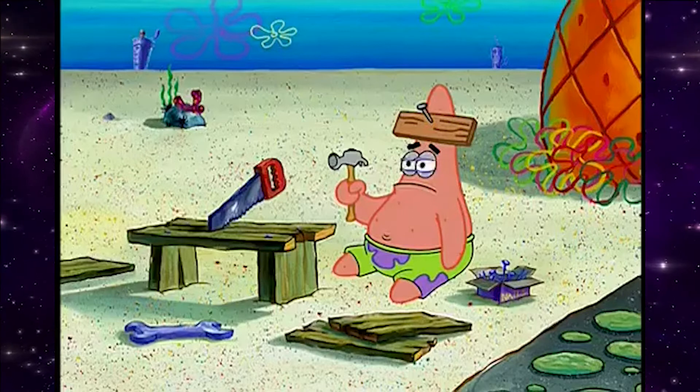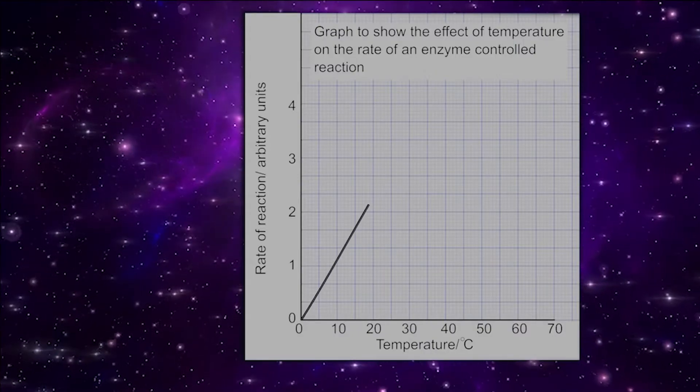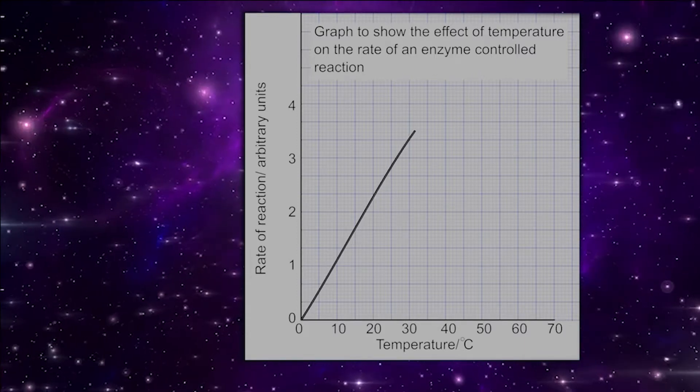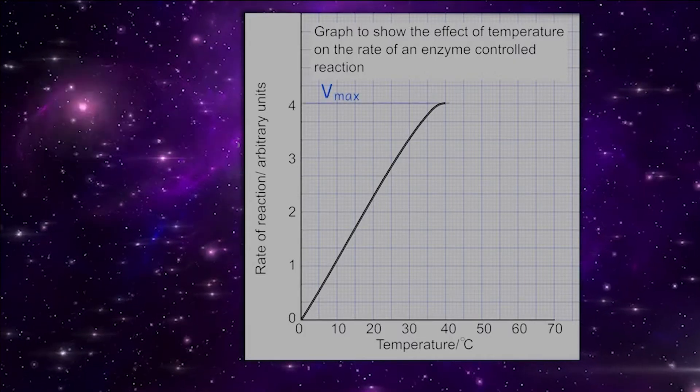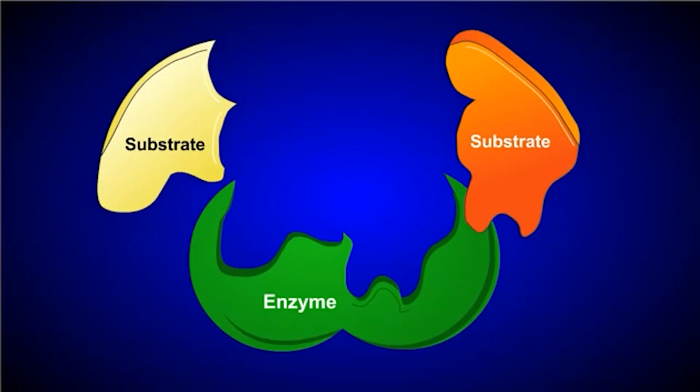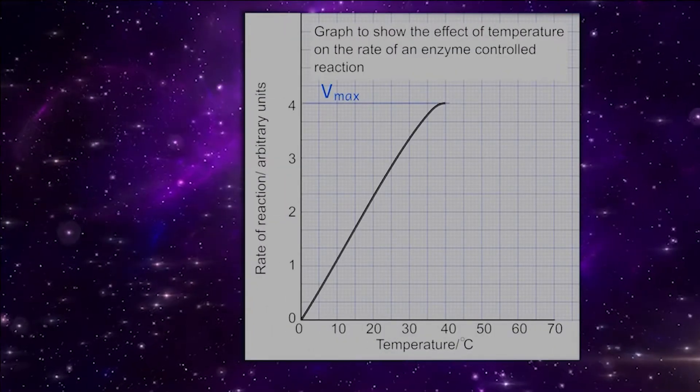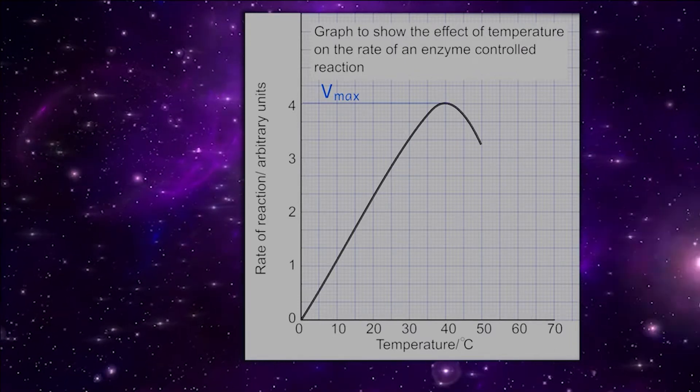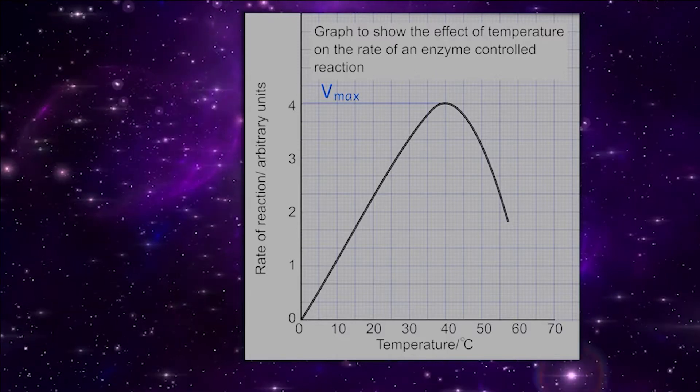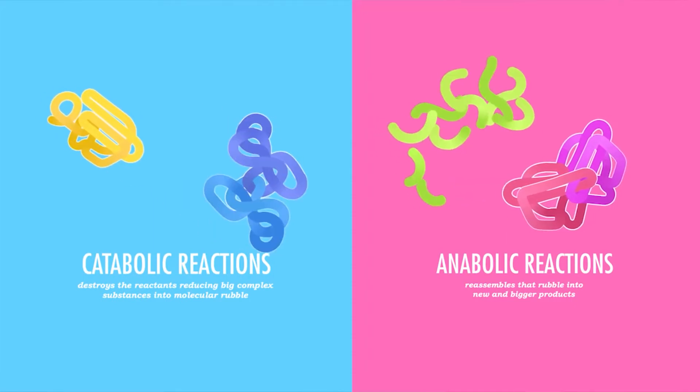Usually, the speed of chemical reactions increases as the temperature does. But in cells, almost every reaction is catalyzed by an enzyme. And once denaturation starts occurring, the reaction speed decreases dramatically due to the proteins losing their structure and function.